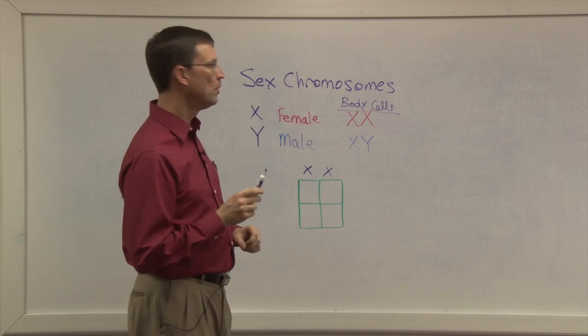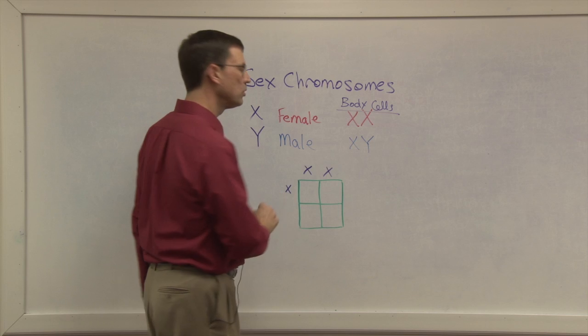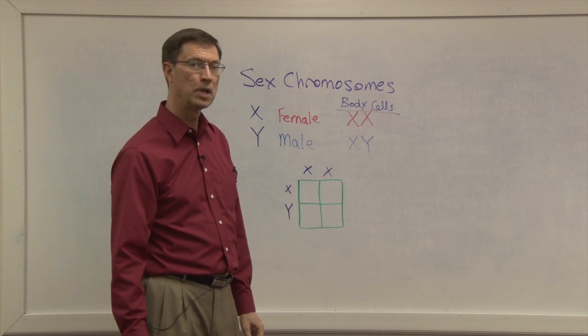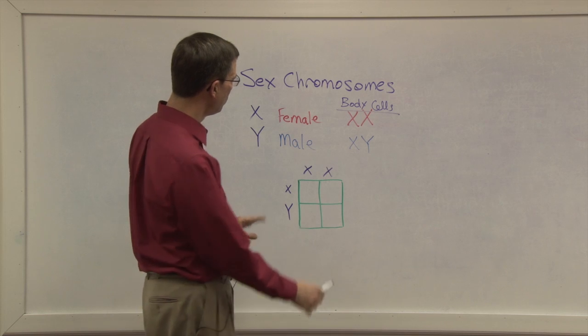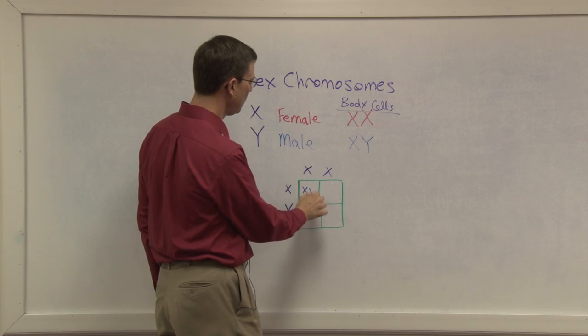The dad's sperm, however, is split. Half of the sperm will produce X chromosomes, and half will produce Y chromosomes. So let's see what happens now when we put an X sperm with an X ovum. We get XX.